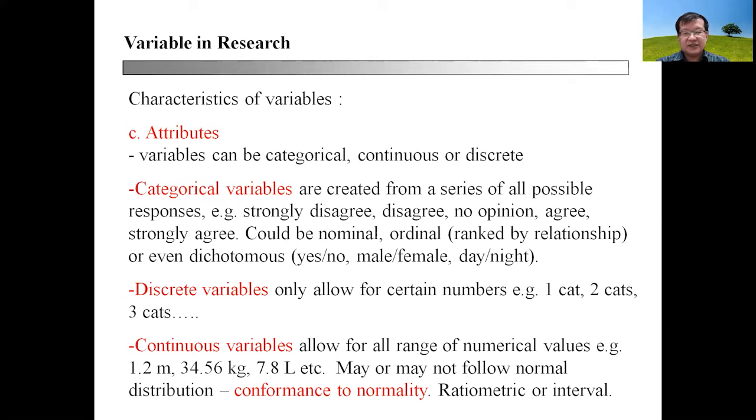The third characteristic of variables will be attributes. This is where you discuss variables as either categorical, continuous, or discrete. Categorical variables are created from a series of all possible responses, for example, strongly disagree, disagree, no opinion, agree, strongly agree.